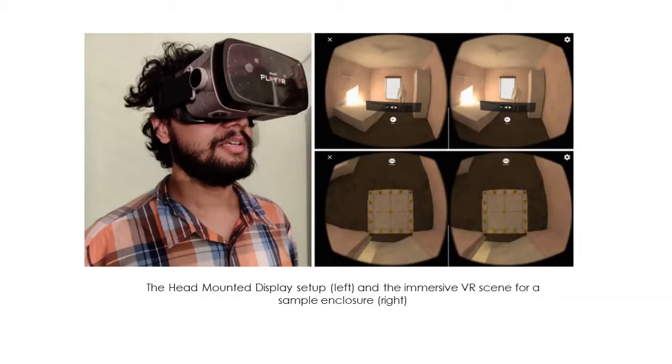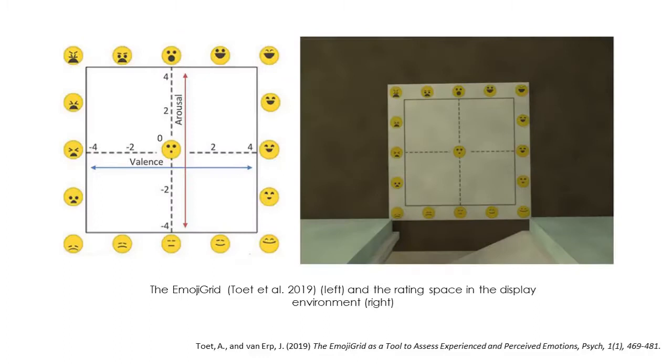Five subjects were exposed to each scene for approximately 20 to 30 seconds and were asked to rate these enclosures. The ratings were in the form of affective appraisals on an emoji grid that appeared within the environment near the foot of the observer. Their response would be converted to valence and arousal values based on the circumplex model of affect on a 9-point Likert scale between minus 4 and plus 4.